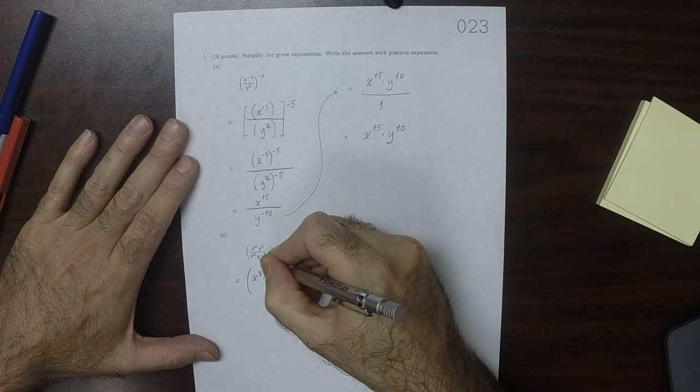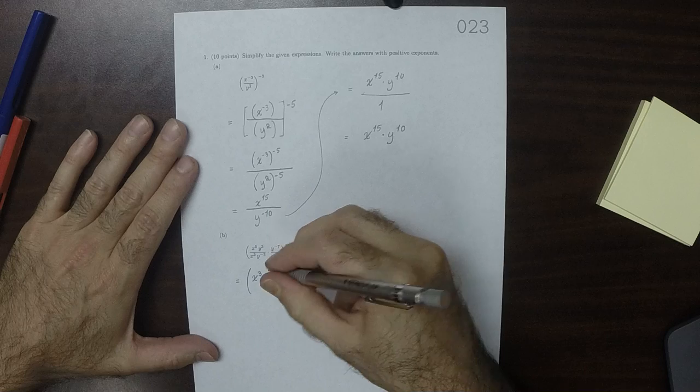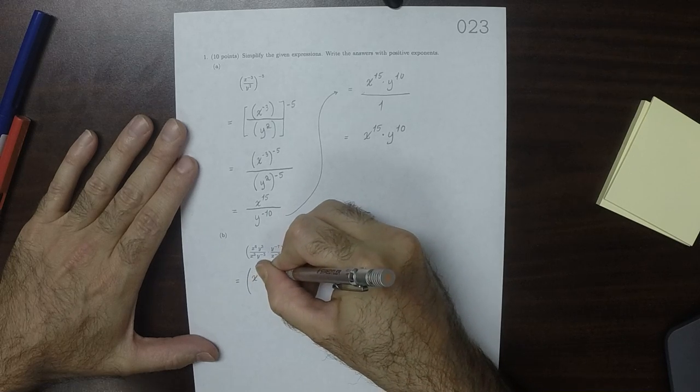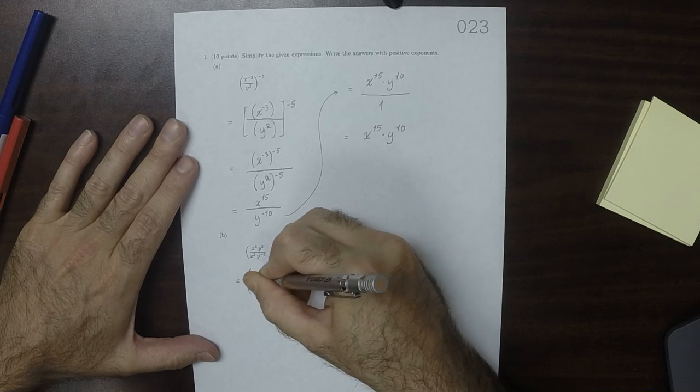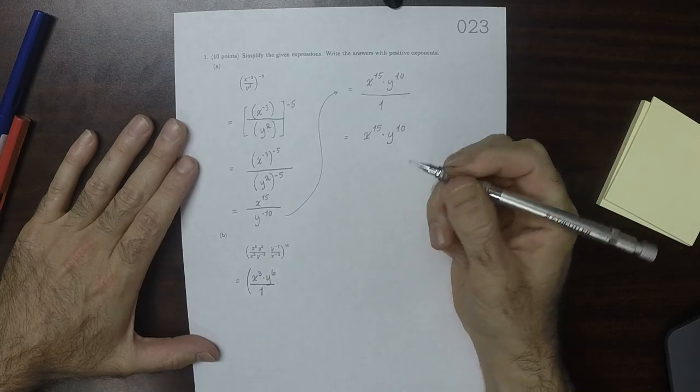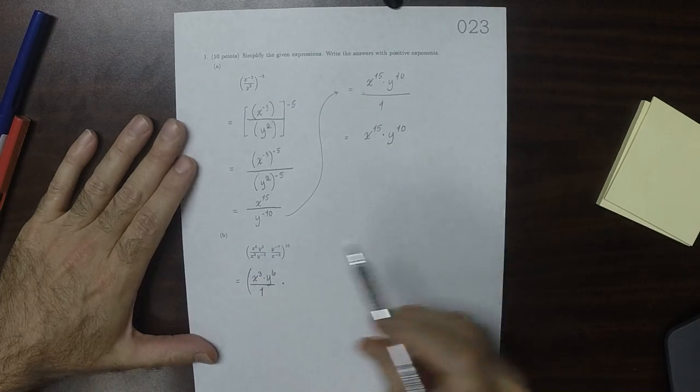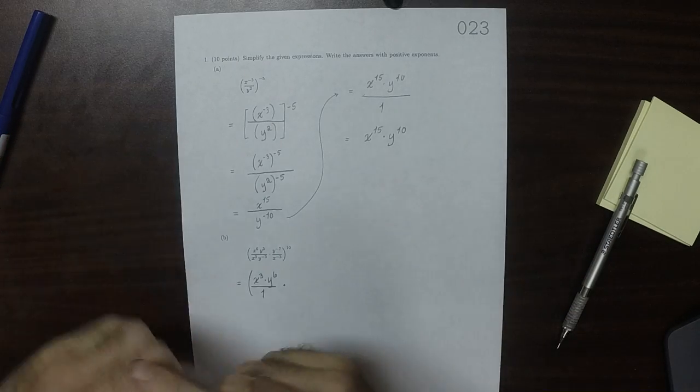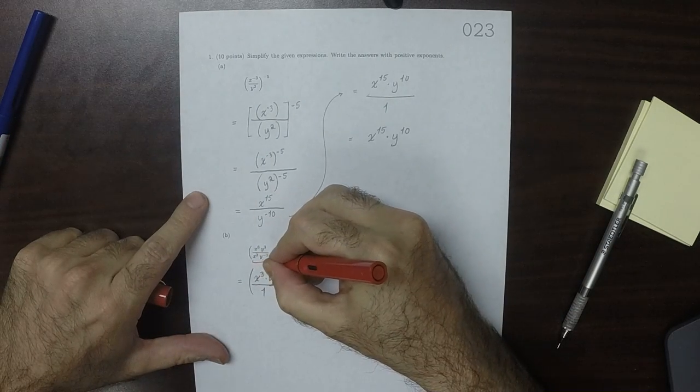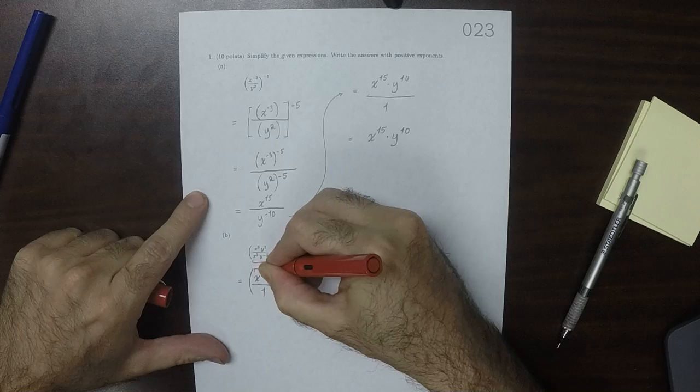And then y to 3 divided by y to negative 3. I'll subtract those exponents, so that would be y to 6, and then over 1. So that's simplifying the first part.